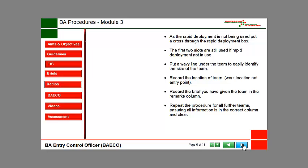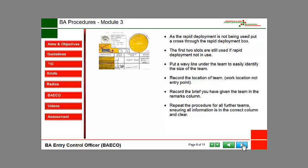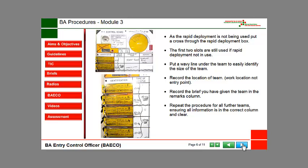As the Rapid Deployment is not being used, put a cross through the Rapid Deployment box. The first two slots are still used if Rapid Deployment is not in use. Put a wavy line under the team to easily identify the size of the team. Record the location of the team — work location, not entry point.